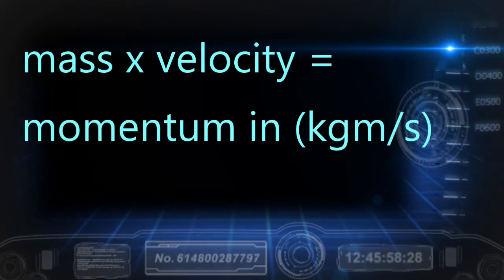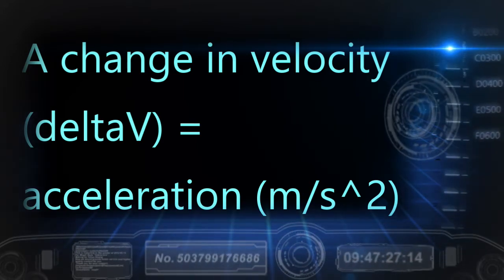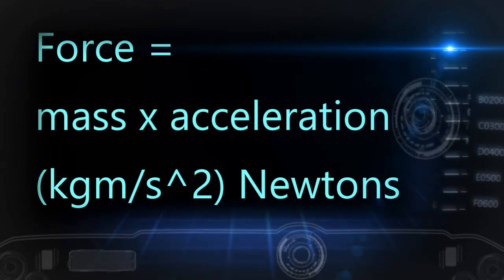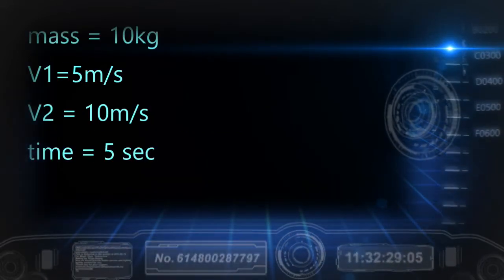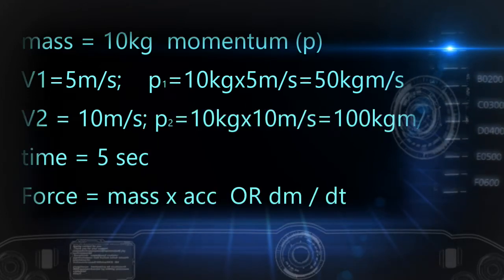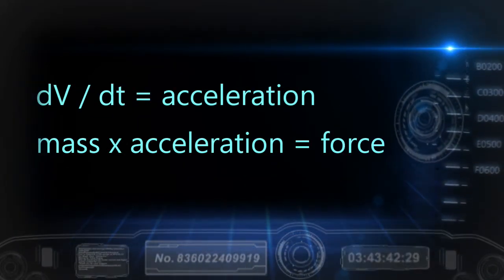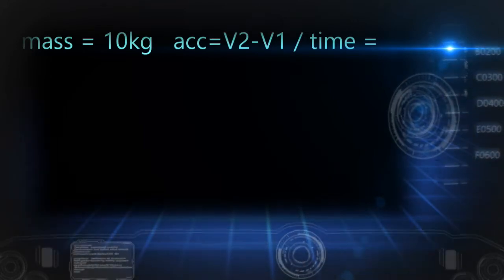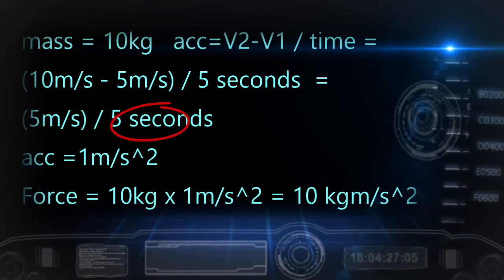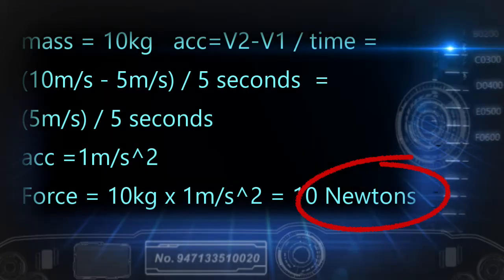If there is a change in velocity, then the object is accelerating, or decelerating — which is just negative acceleration — and we have to track the change in velocity over time. Any time there is a change in an object's velocity, we can use the fundamental elements of that matter to know the force resulting in that change. If an object has a mass of 10 kilograms and was moving at 5 meters per second but accelerated to 10 meters per second over 5 seconds, we know the momentum started at 50 kilogram meters per second and ended at 100. Mass times delta V over delta T gives us the force.